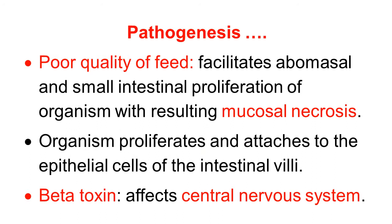Continuing with the pathogenesis: sudden changes in food and poor quality food facilitate abomasal and small intestinal proliferation of Clostridium perfringens type C, causing mucosal necrosis of the abomasum and intestine. The organism proliferates and first attaches to the epithelial cells of the intestinal villi, where it initiates pathogenesis.